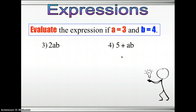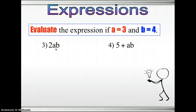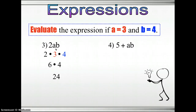Next: 2ab. You have one coefficient and two variables with no operators between them, so this means multiplication. So 2ab is 2 times 3 times 4. 2 times 3 is 6, times 4 is 24.